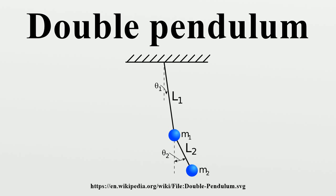It is convenient to use the angles between each limb and the vertical as the generalized coordinates defining the configuration of the system. These angles are denoted θ1 and θ2.